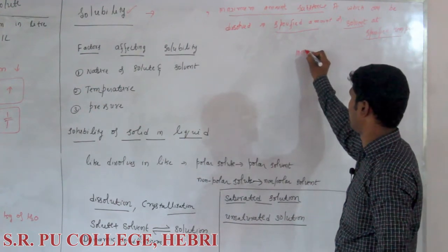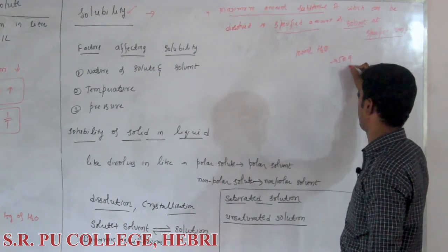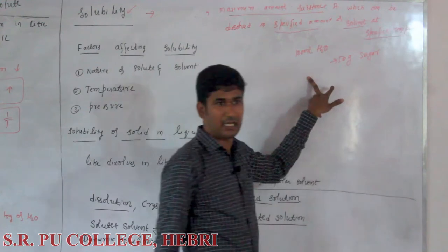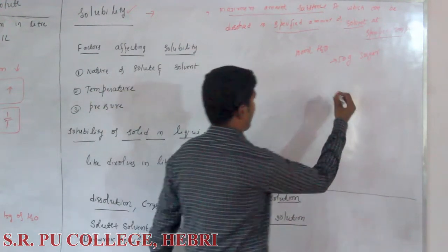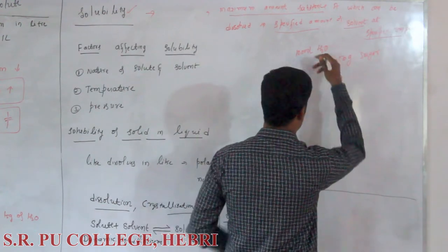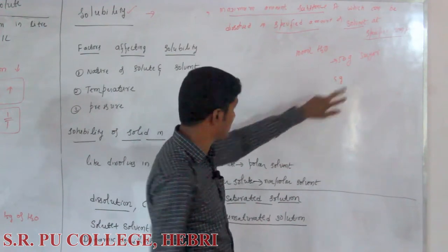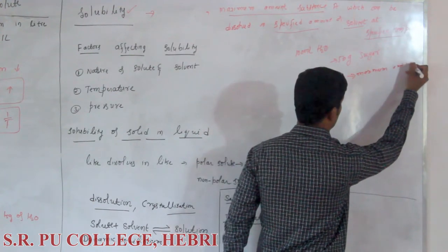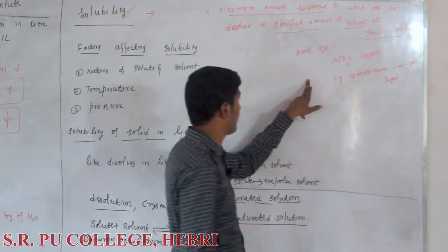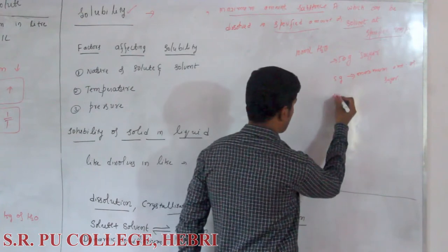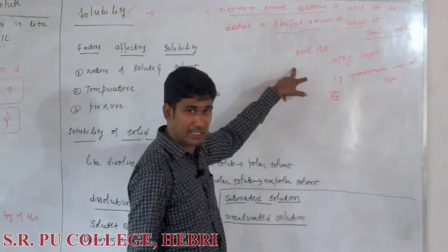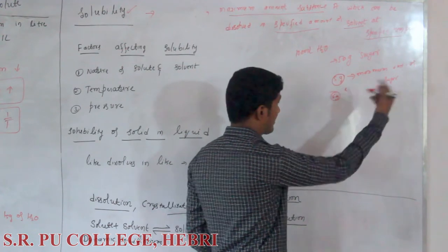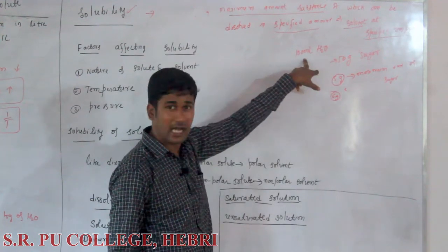Take 100 ml of water and 50 grams of sugar. Can you dissolve all 50 grams in 100 ml of water? It is not possible. The maximum amount that can be dissolved is, let's say, 5 grams. So 5 grams is the maximum amount of sugar which can be dissolved in 100 ml of water. You cannot dissolve 6 grams at that same temperature for the same volume.